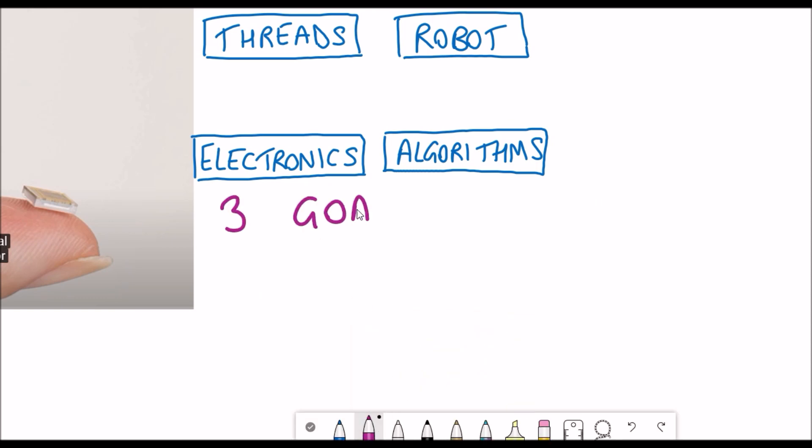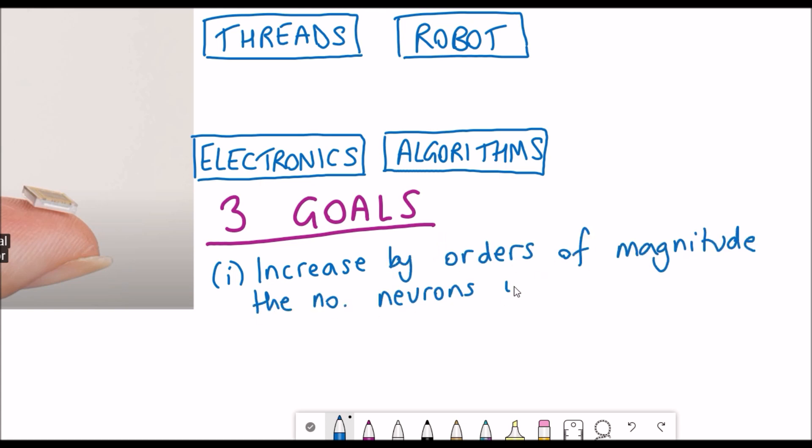The three main goals by using this N1 sensor is to be able to increase by orders of magnitude the number of neurons that they can read from and then feed back into in a manner that is safe and long-lasting.